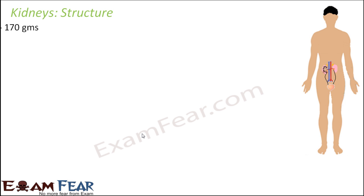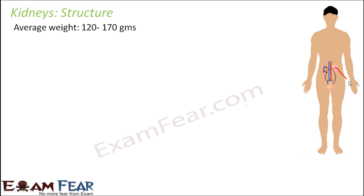Kidneys are bean shaped structures which are located at the back of the abdominal cavity, at the borderline of the thoracic and abdominal cavity. They weigh almost around 120 to 170 grams each. Here you can see these two pink colored structures — this is one kidney and this is the other kidney.